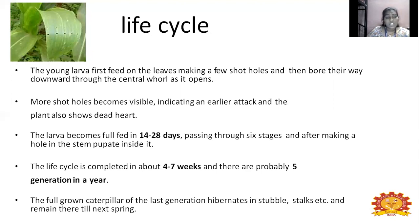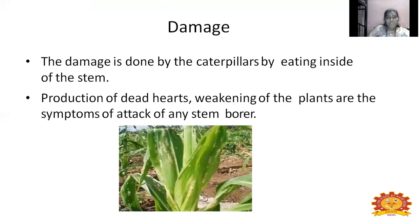The damage: shot hole is the early symptom, caused by the caterpillar eating inside the stem. Identifying this is quite important. The production of a dead heart — the wilting of the plant — is a symptom of attack by stem borer. This is the damage caused by stem borer.